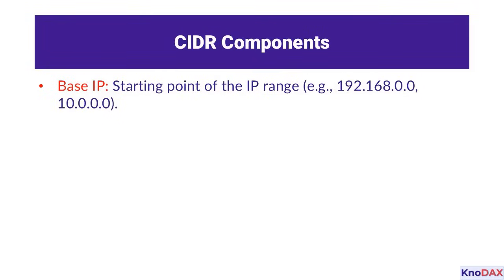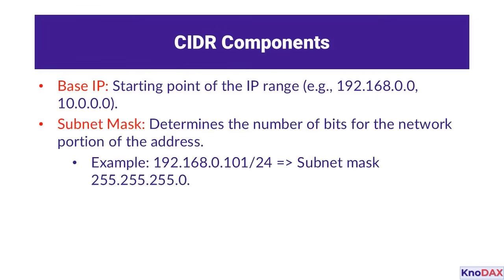Now let's dive into the two primary components of CIDR: the base IP and the subnet mask. The base IP serves as the starting point of the IP address range — examples include addresses like 192.168.0.0 or 10.0.0.0. This is the fixed part of the address that defines the network's foundation. The subnet mask determines how many bits are allocated for the network portion of the address, splitting the IP into the network and host portions and defining the size of the IP range.